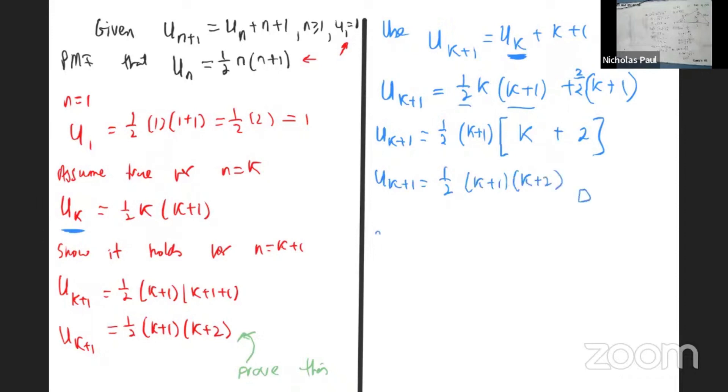And you write your usual statement. Since it holds for n equals one, n equals k, and n equals k plus one, then by PMI it holds for all values n is more than or equal to one.